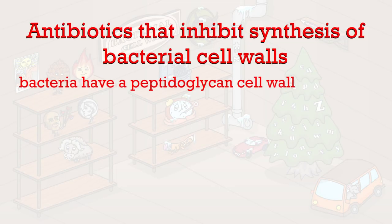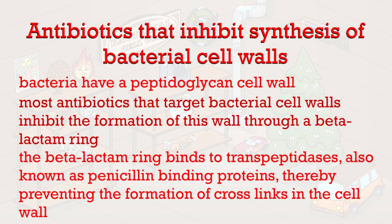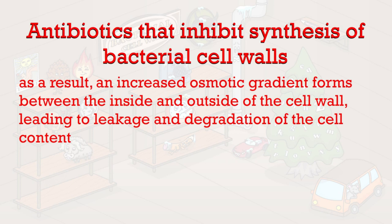Bacteria have a peptidoglycan cell wall, and most of these antibiotics inhibit the formation of this wall through a beta-lactam ring in their molecular structure. This beta-lactam ring binds to transpeptidases, also known as penicillin-binding proteins, thereby preventing the formation of crosslinks in the cell wall. As a result, an increased osmotic gradient forms between the inside and outside of the cell wall, leading to leakage and degradation of the cell contents.